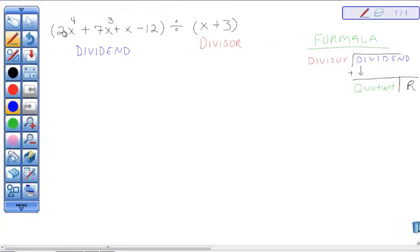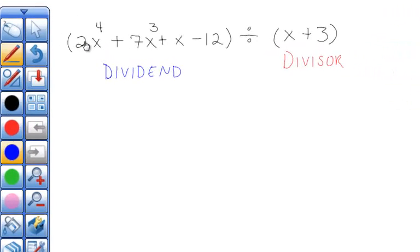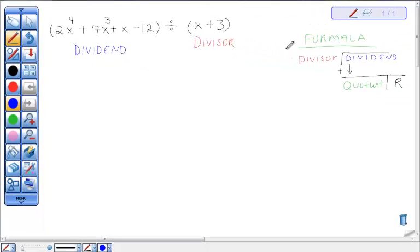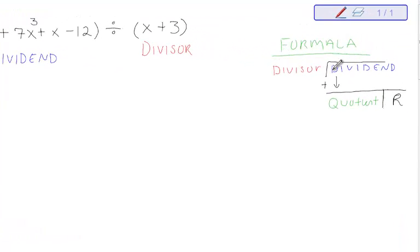The problem I will be using is 2x to the power of 4 plus 7x to the power of 3 plus x minus 12 divided by x plus 3. The formula I will be using is the dividend divided by the divisor. The first number always comes down, which will give us the quotient and our remainder.